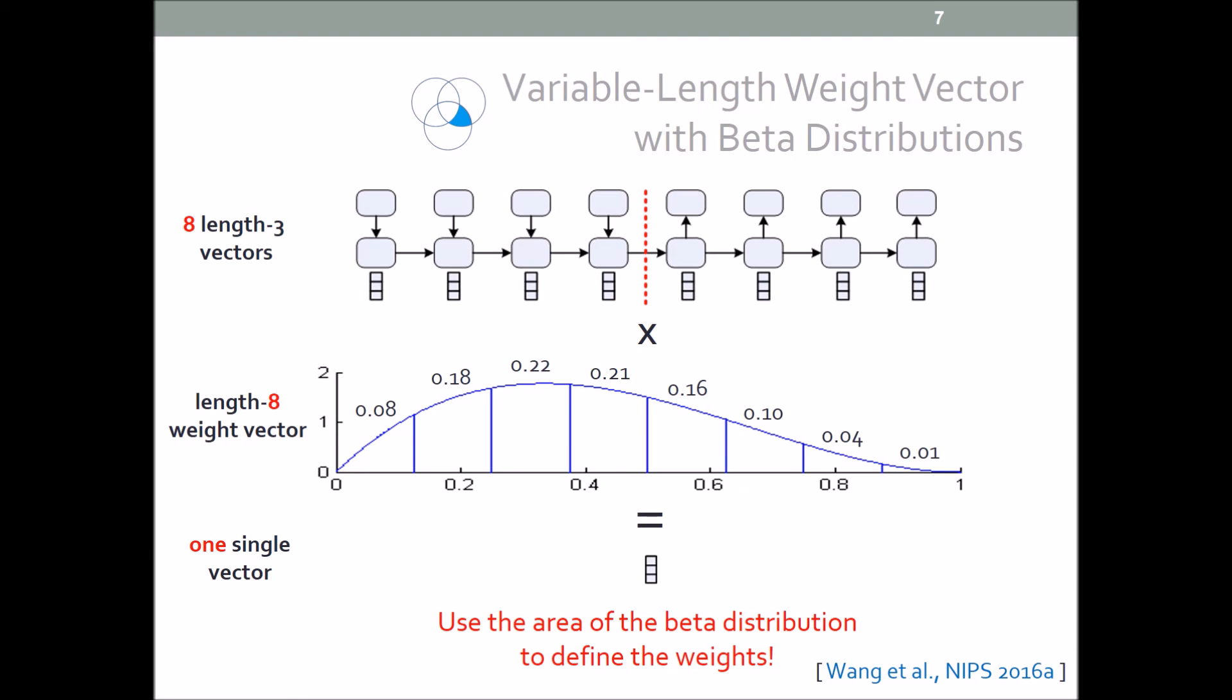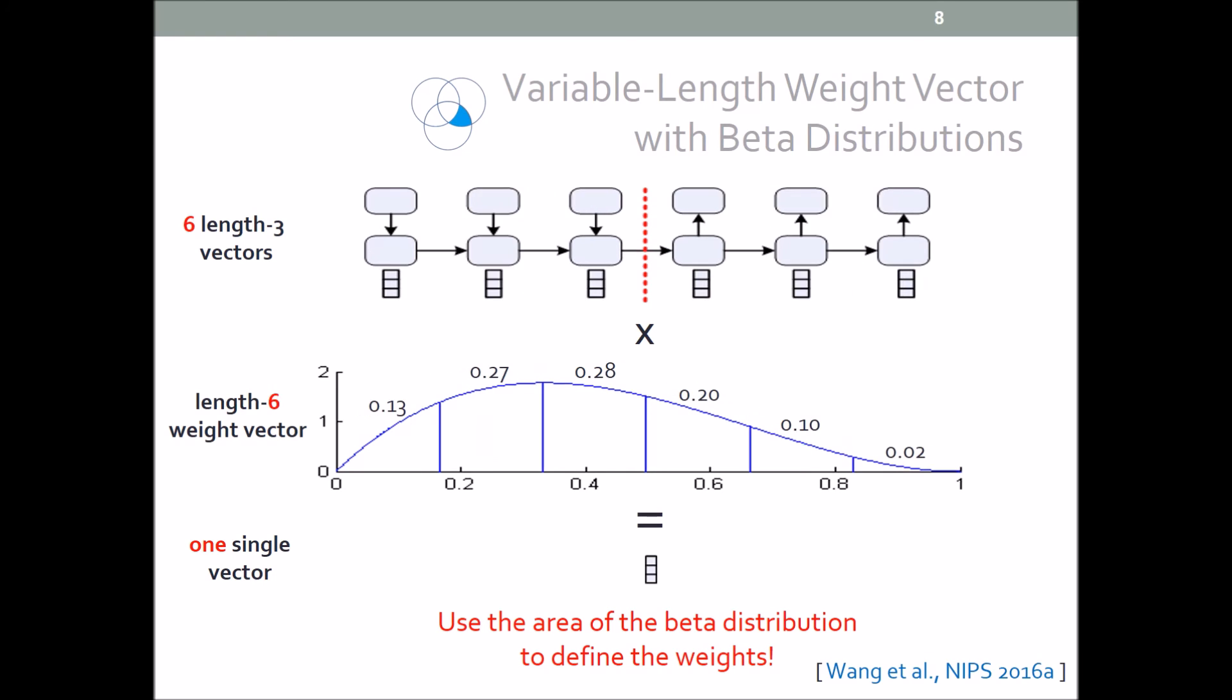For example, with a given distribution, if we want to pool 8 vectors, we can cut the PDF into 8 parts and use the area of each part to define the weights. If we need to pool 6 vectors, we can cut the same PDF into 6 parts. And since we're using beta distributions, we call this beta pooling.